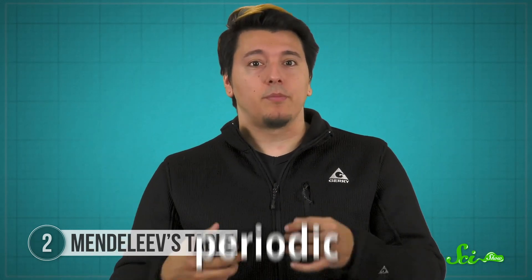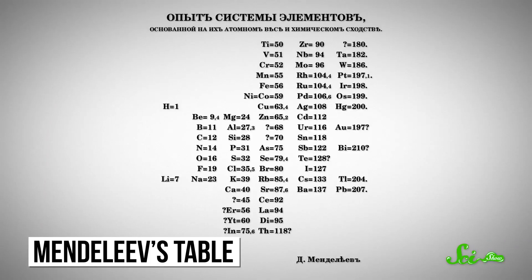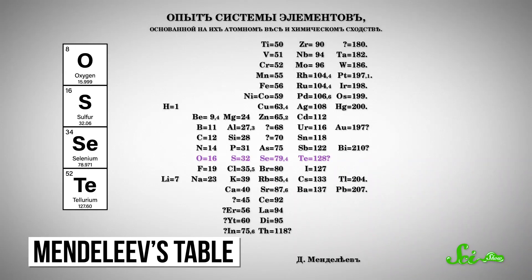The noble gases hadn't been discovered yet, so they were skipped. He started wrapping these repeating, or periodic, patterns into rows and columns. The resulting table might not look like the one we all know and love, but many of its patterns remain today. Oxygen, sulfur, selenium, and tellurium, for example, all appear in a row in Mendeleev's notes, while our modern layout puts them together in a column.